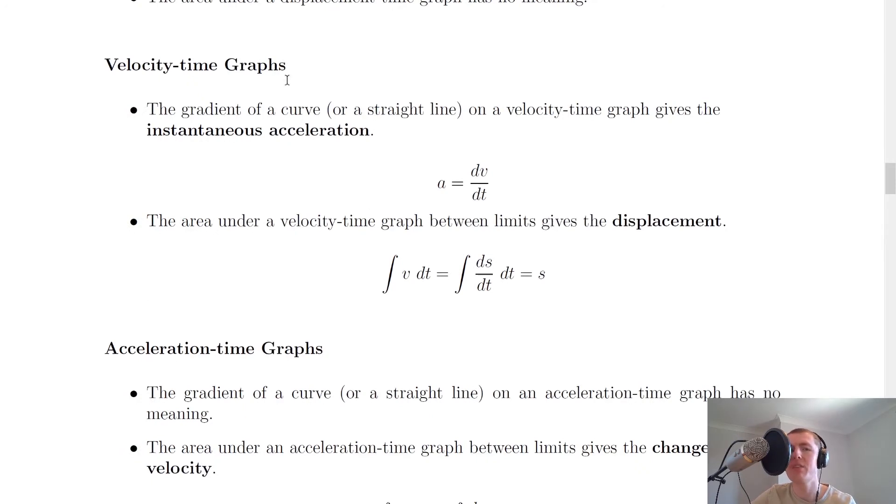Next for velocity time graphs, it says that the gradient of a curve or a straight line on a velocity time graph gives the instantaneous acceleration. And that's because we've already seen acceleration expressed in this form here with the differential. So a equals dv by dt. The area under a velocity time graph between limits gives the displacement. And this is shown with the integration here. So the integral of v dt is equal to the integral of ds by dt dt equals s. So that is just saying that the integral of the velocity with respect to time is equal to the displacement.